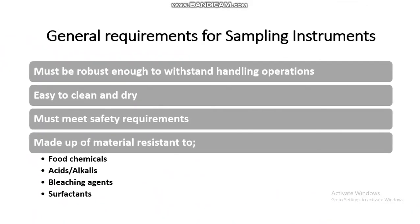First of all, we should know the general requirements for sampling instruments. Instruments or tools must be robust enough to withstand handling operations. They should be easy to clean and dry, and must meet safety requirements. The instruments must be made up of materials resistant to food and chemicals — acids, alkalis, bleaching agents, and surfactants — so sampling instruments should be resistant to corrosion.